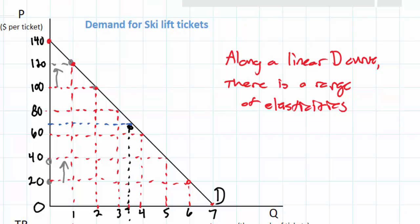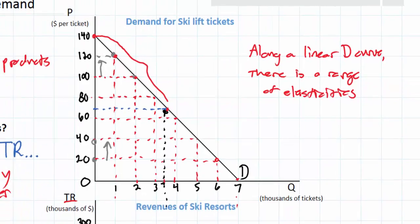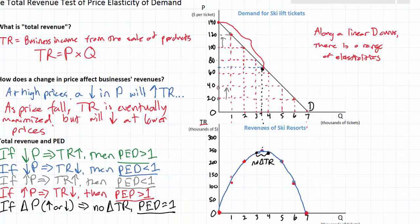At high prices along our demand curve here, that would be from a price of $140 down to a price of $70, decreases in price cause total revenue to increase. Therefore, we know that demand is relatively elastic. So at high prices, demand is relatively elastic.